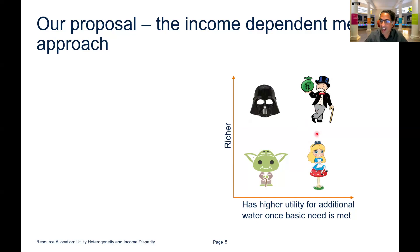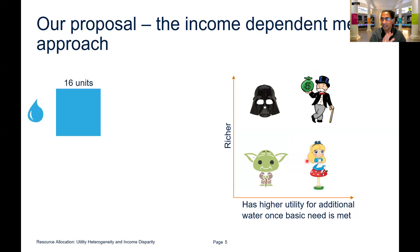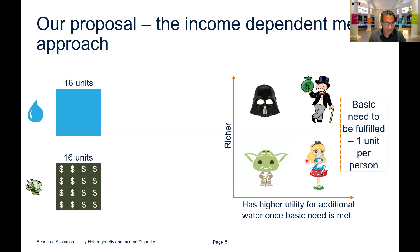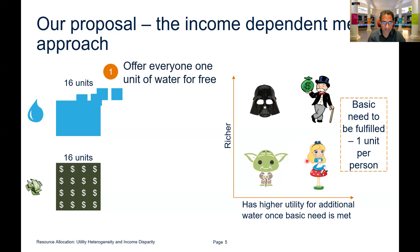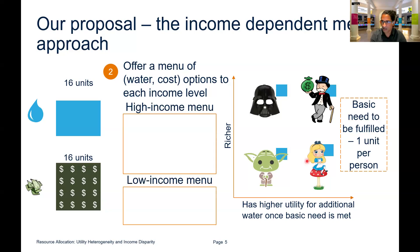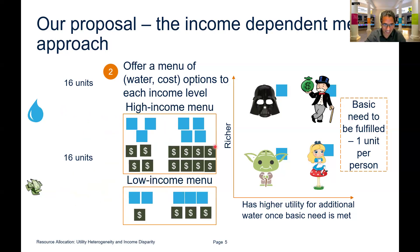Two customers have a higher utility for additional water once basic utility is met, but this is private information — you cannot screen explicitly based on it. Consider an example where you're allocating 16 units of water, the basic need is one unit per person, and you need to recover 16 units of cost. Our proposal: first, offer everyone one unit of water for free. Then, at each income level, offer a menu of water-cost options — a high-income menu and a low-income menu.